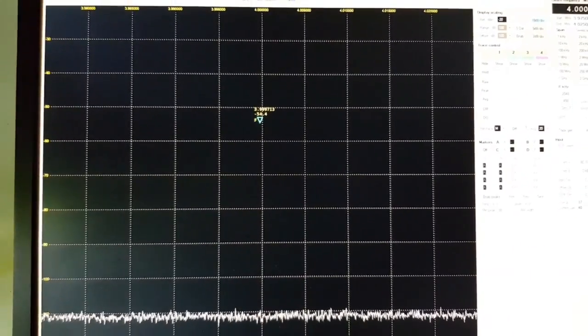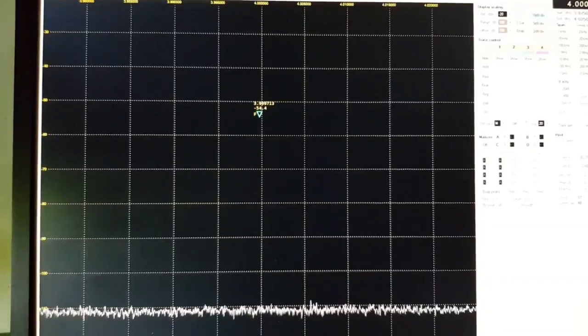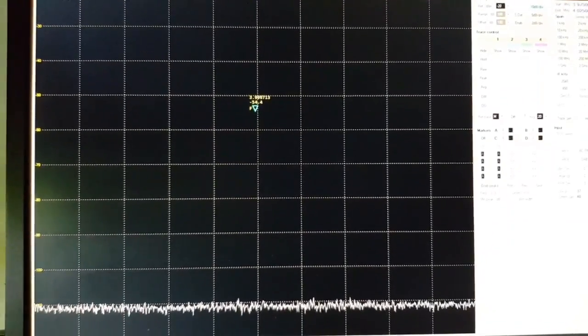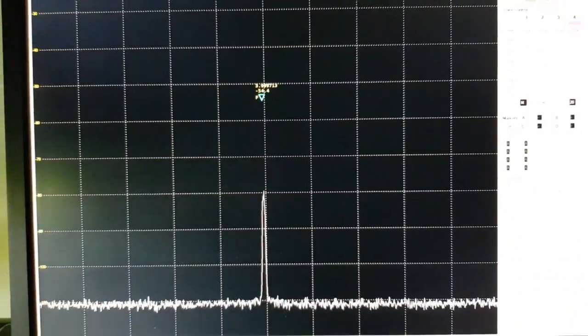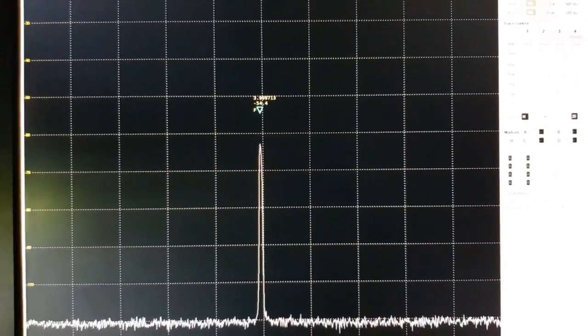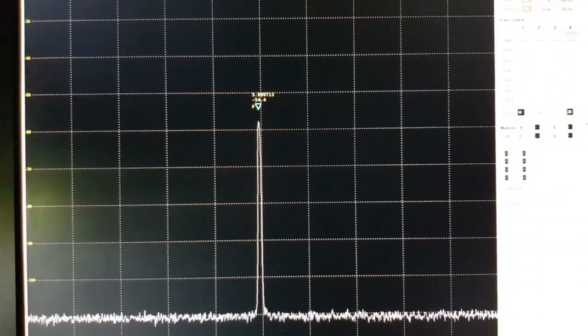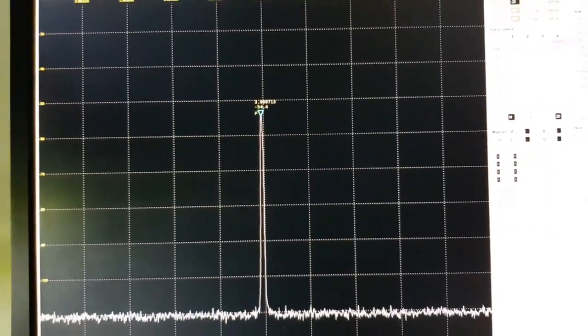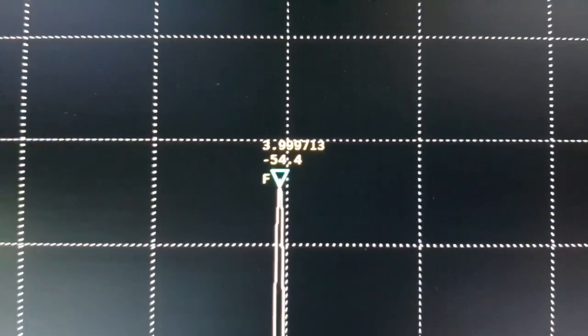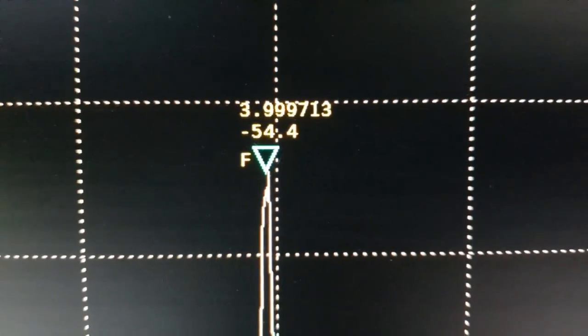So that's with power off, and the frequency span is flat as you'd expect it. I'll just put power on the little IF strip there, and now we can see the peak of the IF strip which is centered on that 4 MHz crystal filter, and it's peaking to about minus 54 dB.